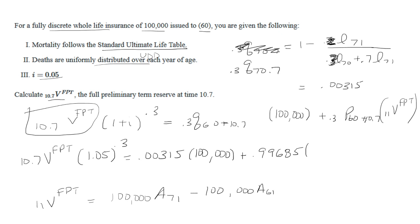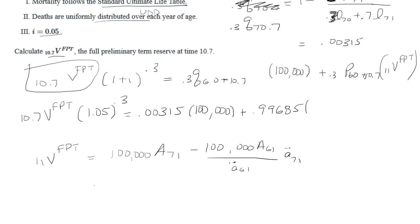The premium is $100,000 times A_61 over the annuity due age 61. This one, the payments go on until death so we don't have any restrictions besides that. Then we're going to multiply by the annuity due at age 71.